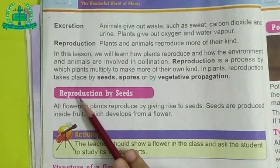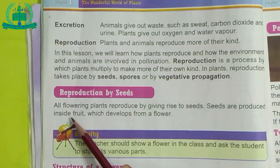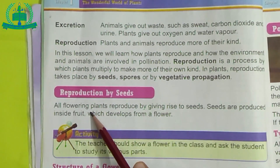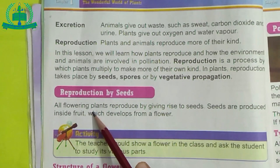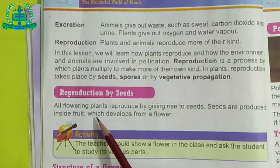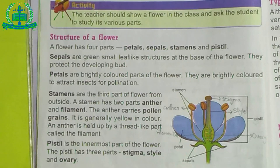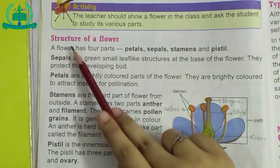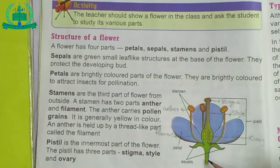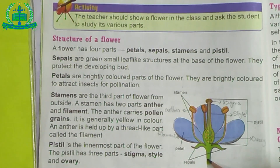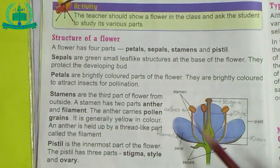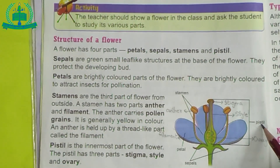Next: Reproduction by Seeds. Reproduction takes place by seeds. Seeds are developed from a flower. We will learn about the structure of a flower. A flower has four parts: first, sepals; second, petals; third, stamen; and fourth, pistil.